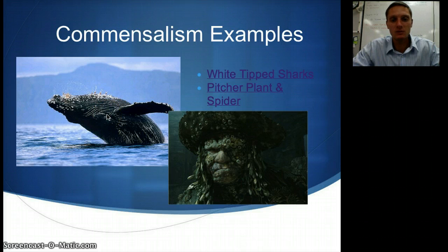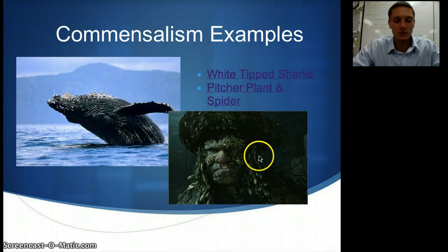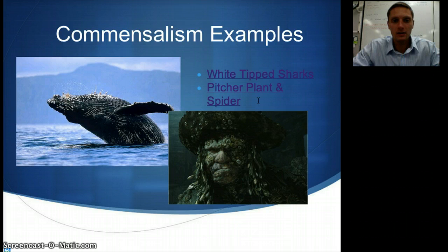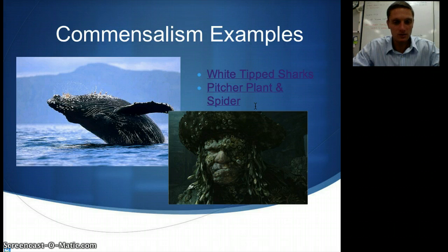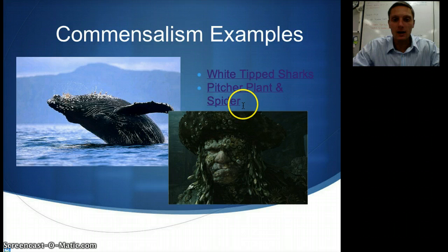Commensalism might really just be species interactions that we don't completely understand. Here's another picture from Pirates of the Caribbean of Davy Jones with barnacles living on him — another example. Also linked on the biology website is the pitcher plant example. The pitcher plant is kind of like a Venus flytrap — a plant species that gets its nutrients primarily from eating insects and small organisms. This one looks at how the plant has an interaction with a spider, where the spider is actually the one that's benefiting. Watch that one to check out the really cool trick it does.